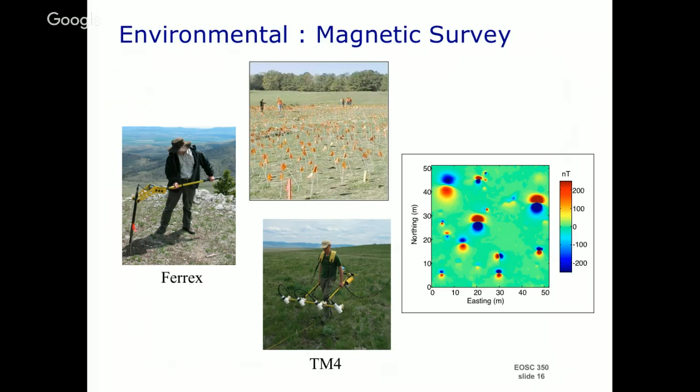Let's go back to the UXO problem. We decided it's iron and steel, so it might be magnetic. One of the ways of trying to find this is to go out with an instrument called a magnetometer.